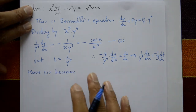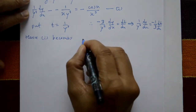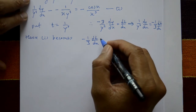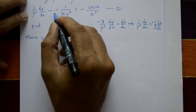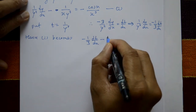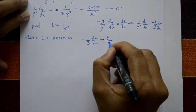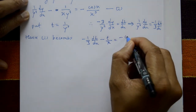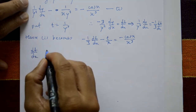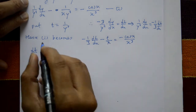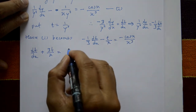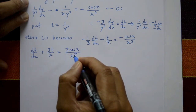Equation number 1 becomes: minus (1/3)(dt/dx) minus (t/x) equals minus cos x / x³. Changing the sign and multiplying the whole equation by 3: dt/dx plus 3t/x equals 3cos x / x³. This is now a linear equation.